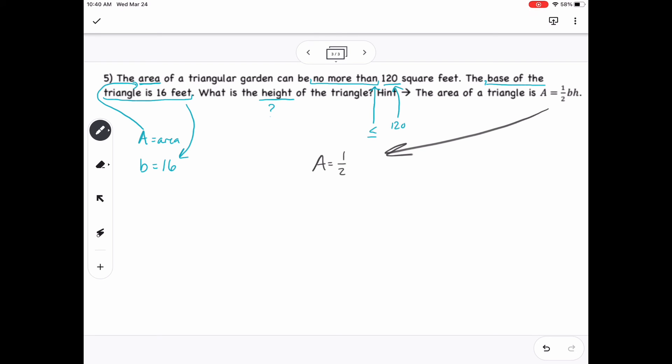So taking that hint, the area of a triangle, and then also completing this inequality that they've given me, they've said area is no more than 120 square feet. So I can say A is less than or equal to 120. Now because I know A is also equal to one-half B times H, I can actually insert that in into that inequality. So then instead of having an A there, I can write one-half B H less than or equal to 120. And then from there, I know that B is actually 16, so I can insert that in as well.